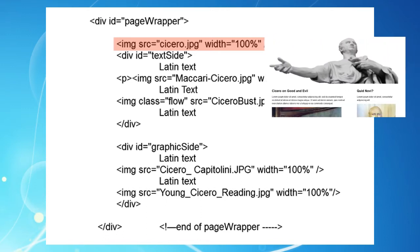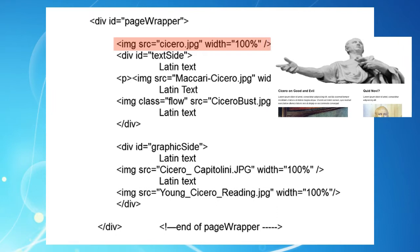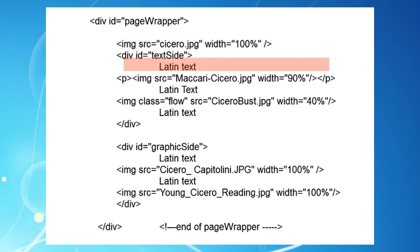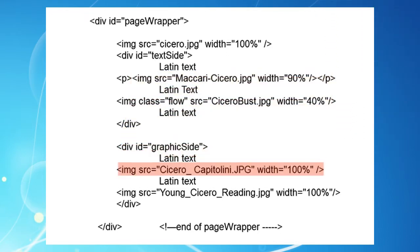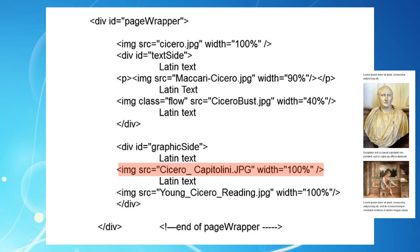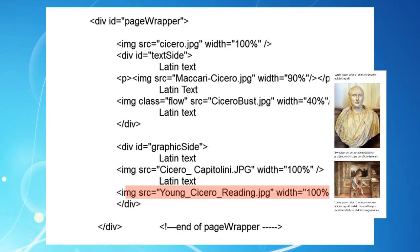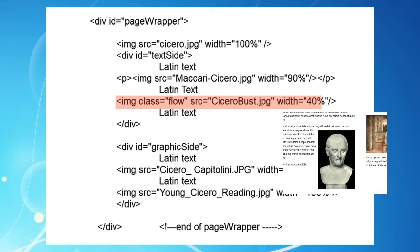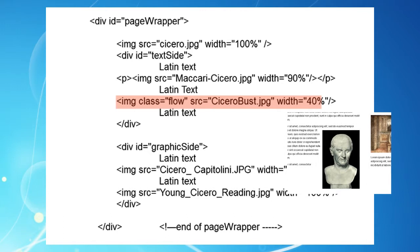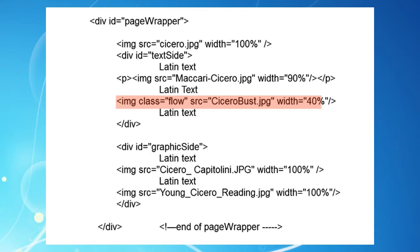The top banner image is 100% width and fits right across page wrapper. The second large image fits 90% across text side, to give a bit of space on its right. The two images in graphics side both have widths of 100% and fit right across their div. The interesting one is the small image of Cicero's bust in text side — its width is only 40%, and text flows around its left side when we alter the browser. To achieve this, we've added a class called Flow, which we'll look at in a moment.